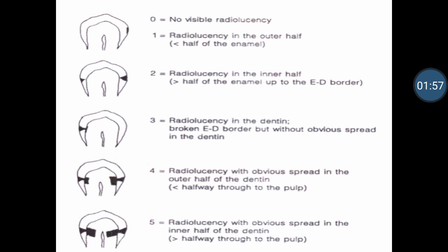The assessment is given codes 0 to 5. Code 0: no visible radiolucency interproximally near the contact area. Code 1: radiolucency in the outer half of enamel. Code 2: radiolucency in the inner half of enamel. Code 3: radiolucency in the dentin without obvious spread — it has almost reached the dentin-enamel junction (DEJ). Code 4: radiolucency with obvious spread in the outer half of the dentin. Code 5: radiolucency with obvious spread in the inner half of the dentin. This is how bite-wing radiographs are assessed based on the presence of radiolucency extending towards the DEJ.